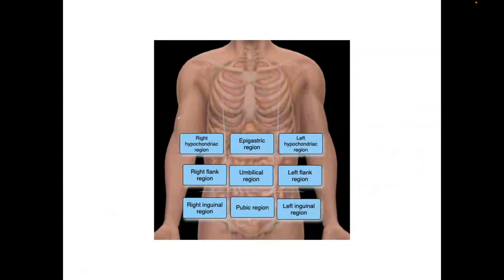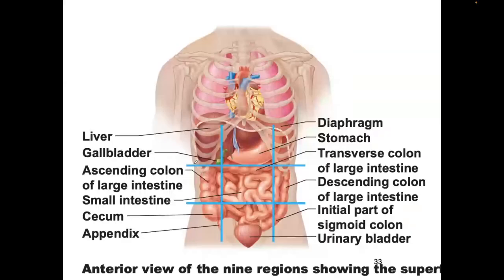On some of the lab quizzes it's a drag-and-drop format where all possible answers are off to the left. So we have: umbilical region, pubic region, epigastric, left inguinal, right inguinal, left hypochondriac, right hypochondriac, left flank, right flank — and if it's not flank, they call them lumbar: left lumbar and right lumbar. Instead of quadrants, it's like the tic-tac-toe sign — the number sign — and it's the same organs, just now using the nine regions.